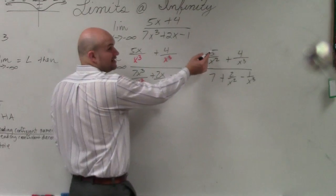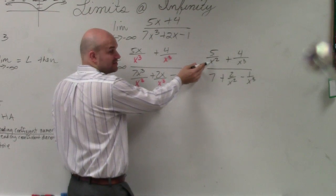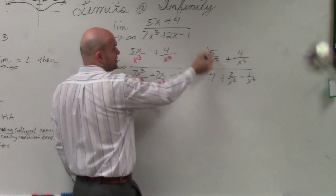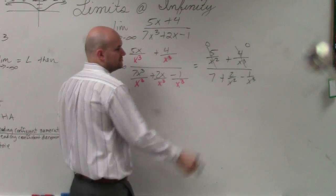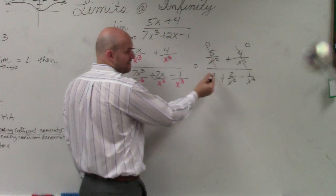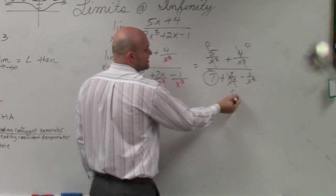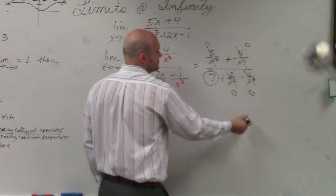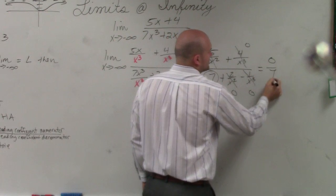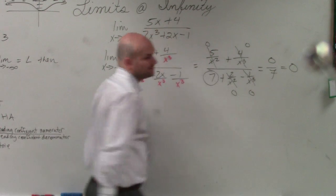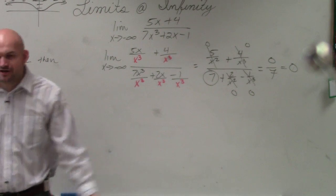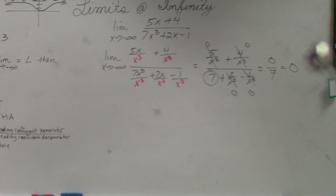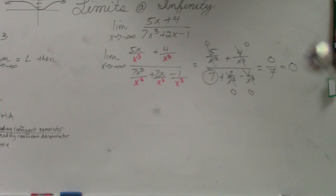Now, any number divided by a variable raised to a constant goes to 0. That goes to 7, so that remains, and the rest go to 0. So 0 over 7 equals 0, which we knew all along. You're not going to have to show all your work — you can basically just state that the horizontal...